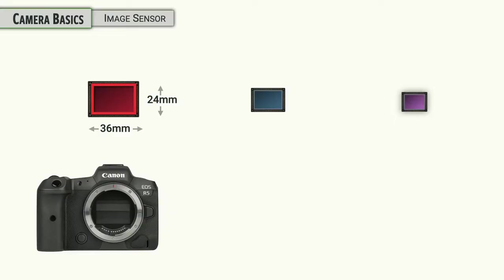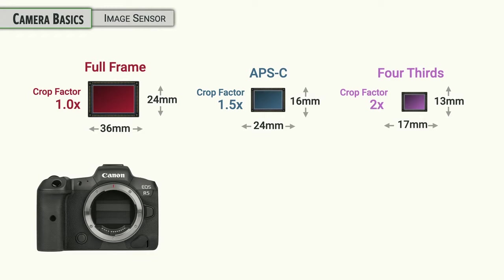There are a variety of other sensors out there on the market today. This one is known as full frame, has a crop factor of 1.0 because it's the same as 35 millimeter. Other cameras from Canon and other manufacturers will have smaller size sensors in some cases.